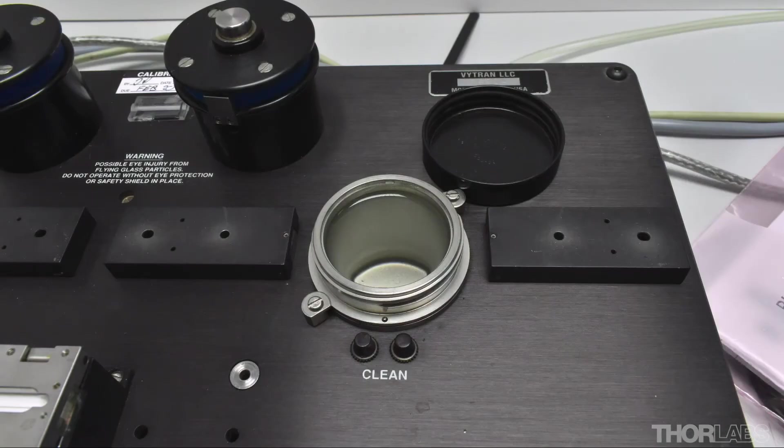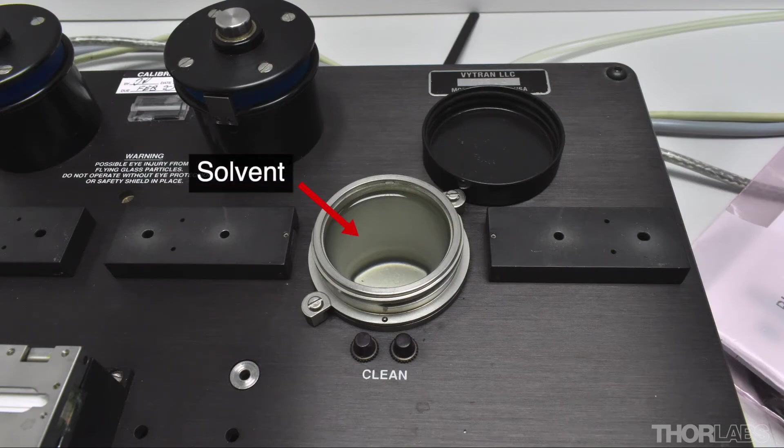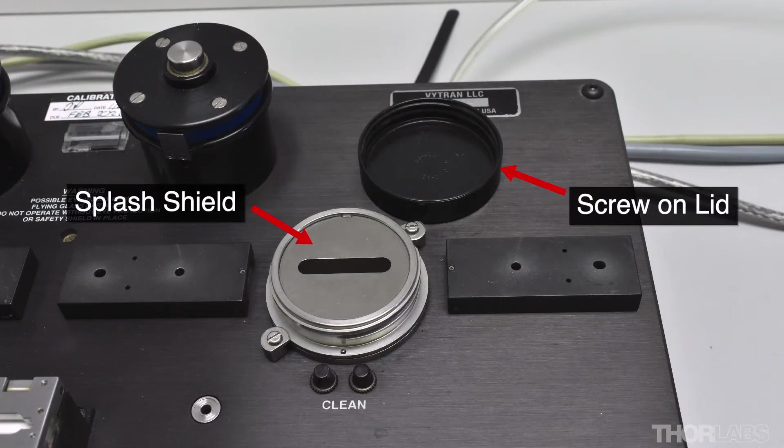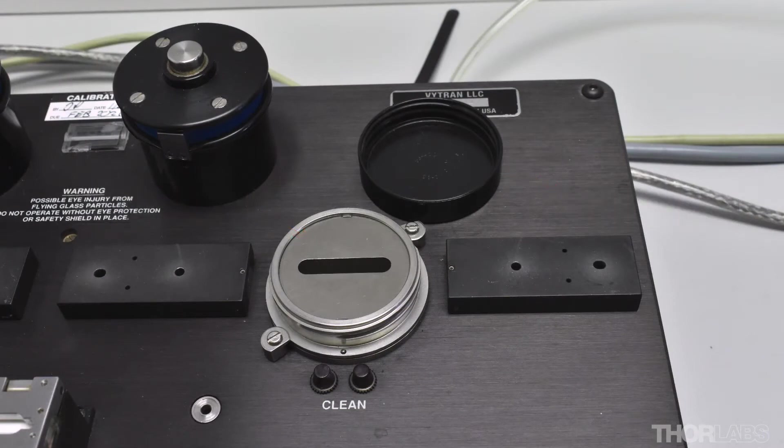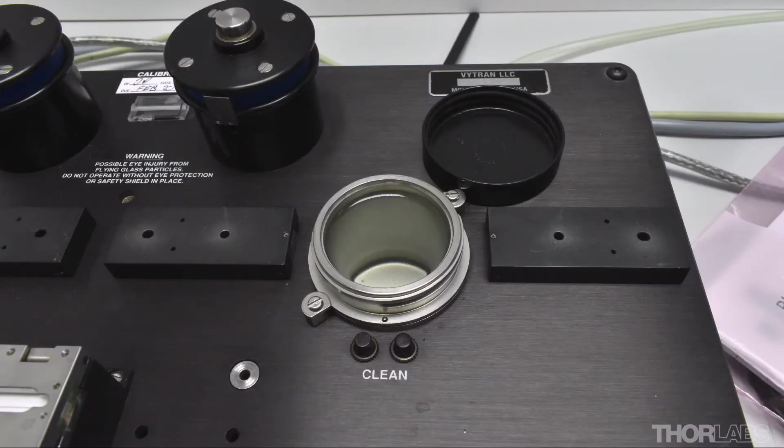The cleaning station has an ultrasonic container that can be filled with a solvent such as acetone or IPA. The container has a metal shield and screw-on lid to reduce the amount of solvent that evaporates. The solvent level should be about a quarter of an inch or half a centimetre below the top of the container.